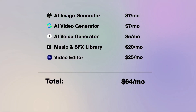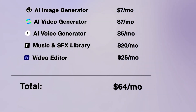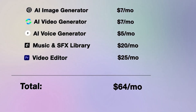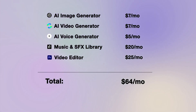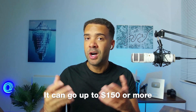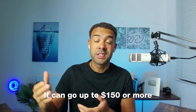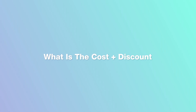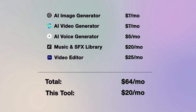So if you were subscribed to those five AI tools, each month you'd be paying at least $64 just to get started experimenting with making high quality AI videos. And when you get more serious and start wanting to get more use out of these tools, you could be paying $100, $150 plus a month. But this new all-in-one AI video generator that has all of those features included starts at just $20 a month.